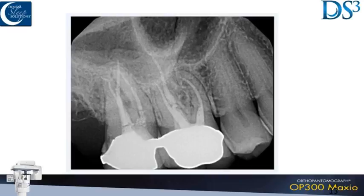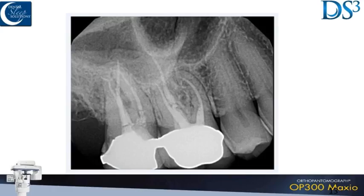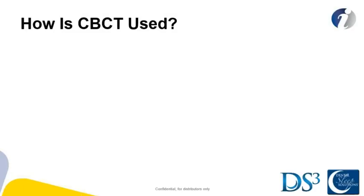Here's a great example of a case where someone presents with pain, the tooth is already endodontically treated, and you don't see anything on the PA or the pan. However, if you take a 3D image, it's pretty obvious we completely missed the canal. We have a three-dimensional body, and having a three-dimensional picture can make all the difference.